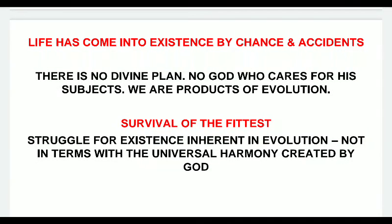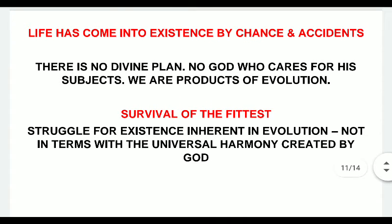Another thing Darwin said was that life came into existence by chance and accident. Evolution was a very long process and there was no divine plan that actually created this evolution — it was just accident. Evolution happened by accident; it was just chance that man became man. So there is no divine plan, and there is no God who cared for his subjects. We are products of evolution — not subjects or children of God. This philosophy of chance and accident, which became part of Victorian popular culture after Darwin's thesis, was adopted by Thomas Hardy in a great way.